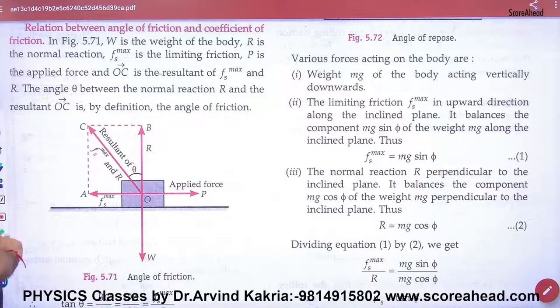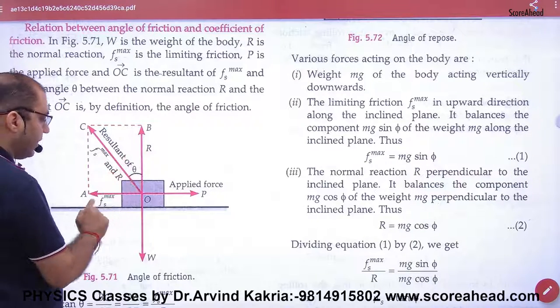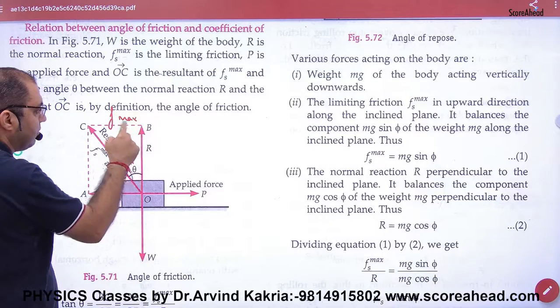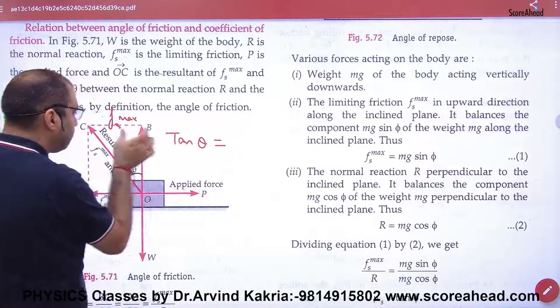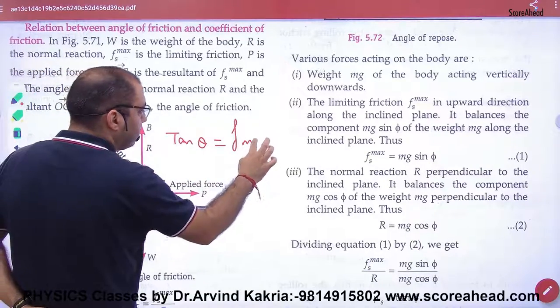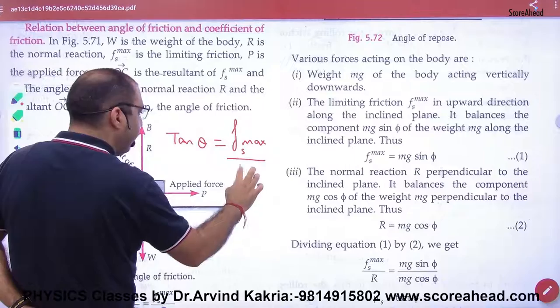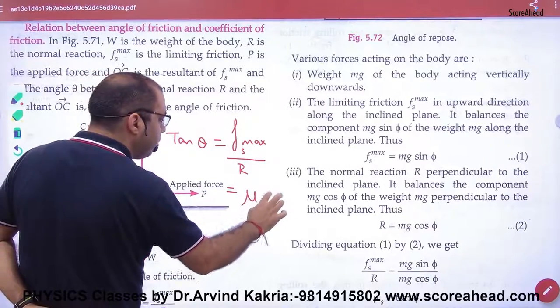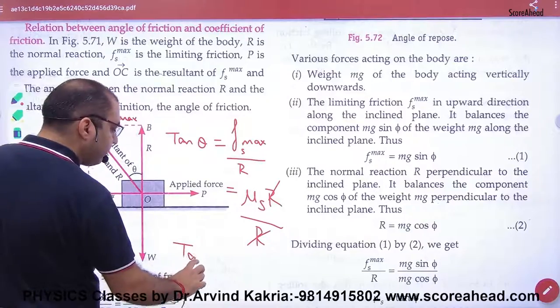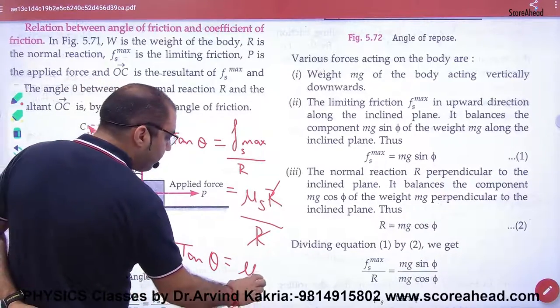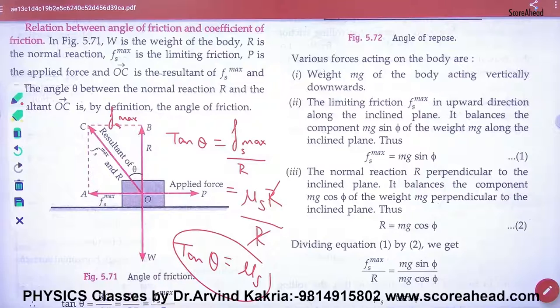Angle of friction, if it is F max, that is maximum static friction. What will be tan theta in this triangle? F max static divided by R. And what is this? Mu s into R. So what is the answer? Tan theta is equal to mu s.